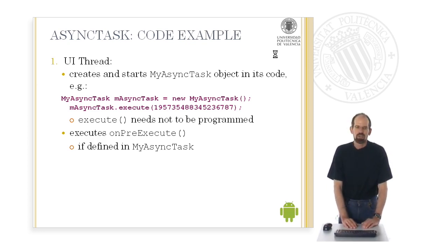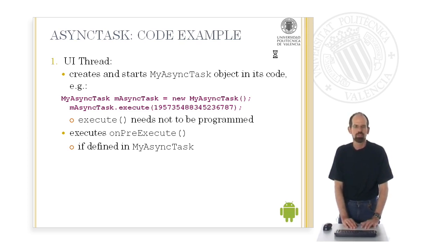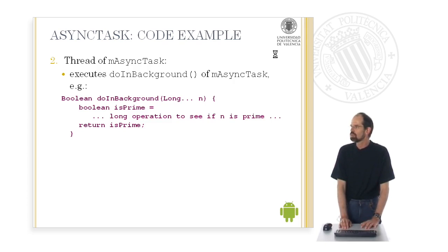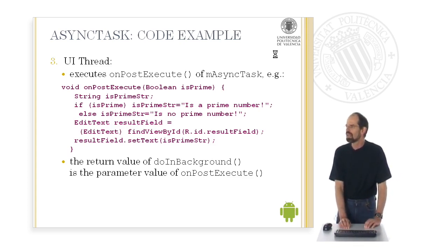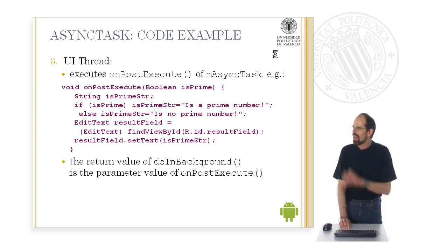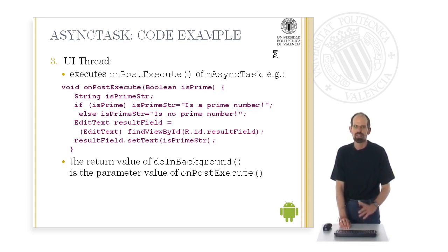An example based on the MyAsyncTask class: first, the user interface thread creates a MyAsyncTask object and calls the execute method on it — you don't need to program this execute method, it is already provided. Afterwards the background thread executes doInBackground, performing a long background operation to check if the parameter is a prime number, and finally returns a corresponding Boolean value. This triggers the execution of onPostExecute by the UI thread, which takes the return value, checks whether it is true or false, and publishes a corresponding string — 'is a prime number' or 'is no prime number' — on the user interface by writing it into an EditText field.